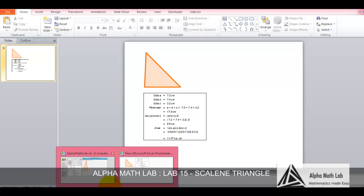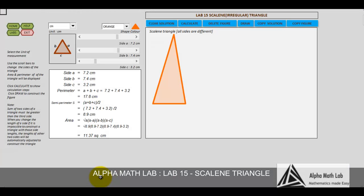Back to the lab again. Please see the note over here: sum of two sides of the triangle must be greater than the third side always. When you change the length of a side, if it is impossible to construct a triangle with those sides length, the lengths of other two sides will be automatically adjusted to construct the triangle. It is not possible to construct a triangle with any three values. In order to construct a triangle, sum of two sides of the triangle must be always greater than the third side.